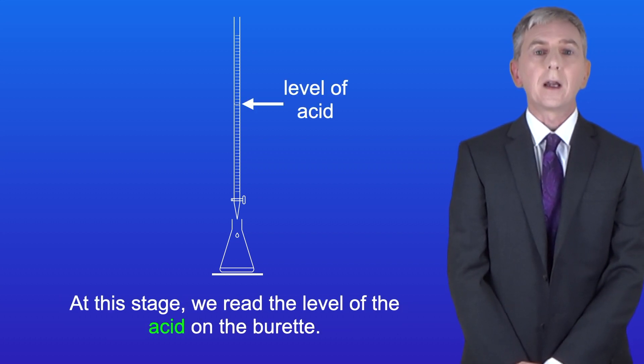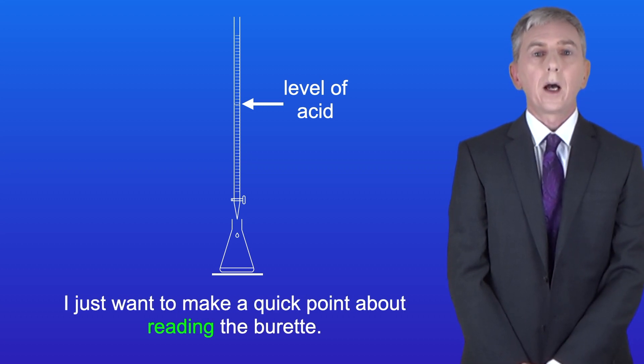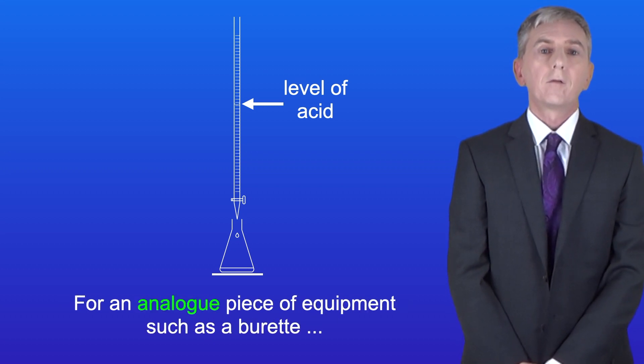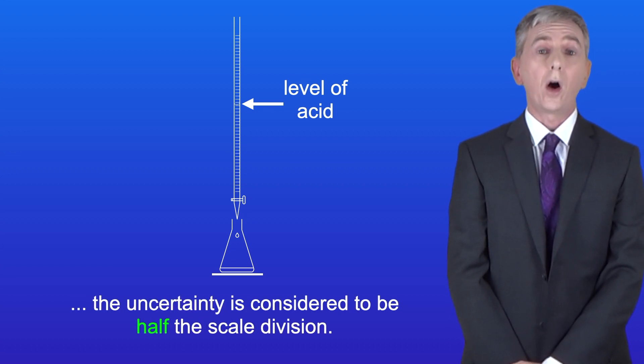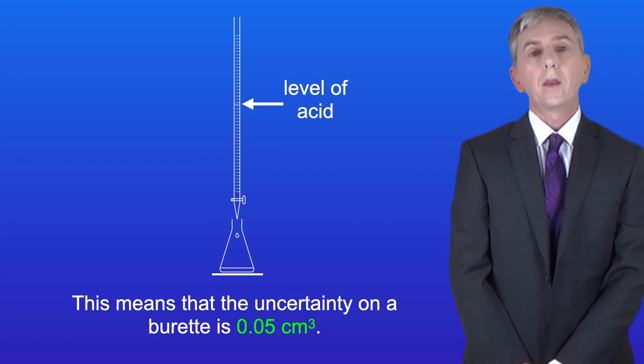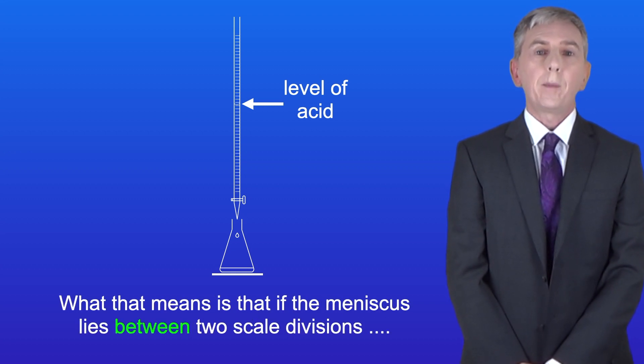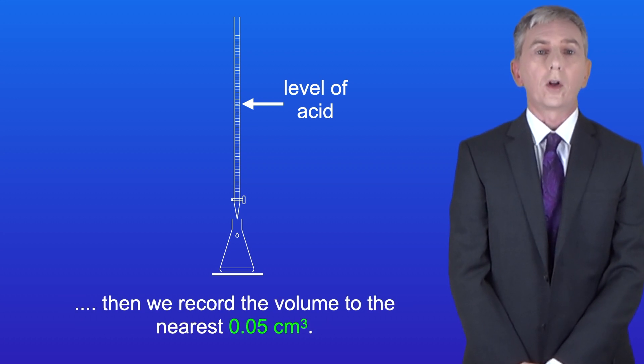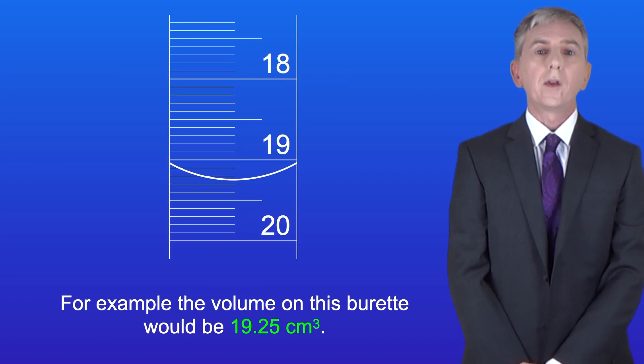At this stage we read the level of the acid on the burette. Now I just want to make a quick point about reading the burette. The scale markings on a burette are to the nearest 0.1 cm³. For an analog piece of equipment such as a burette the uncertainty is considered to be half the scale division. This means that the uncertainty on a burette is 0.05 cm³. So what that means is that if the meniscus lies between two scale divisions then we record the volume to the nearest 0.05 cm³. So for example the volume on this burette would be 19.25 cm³.